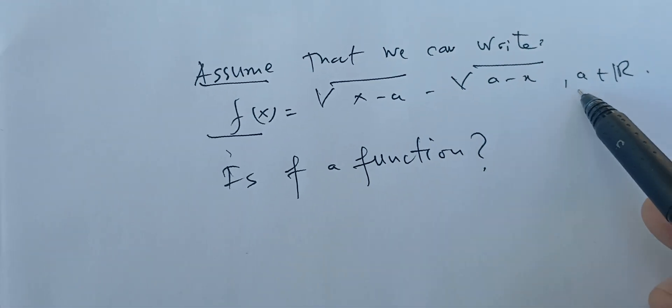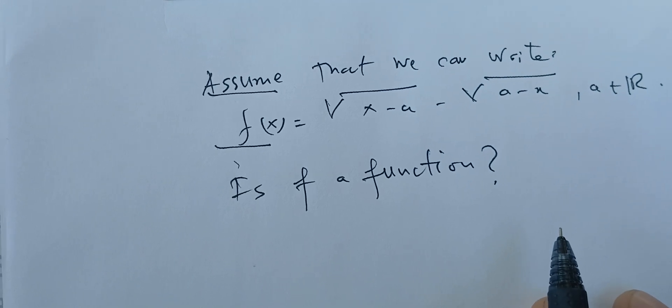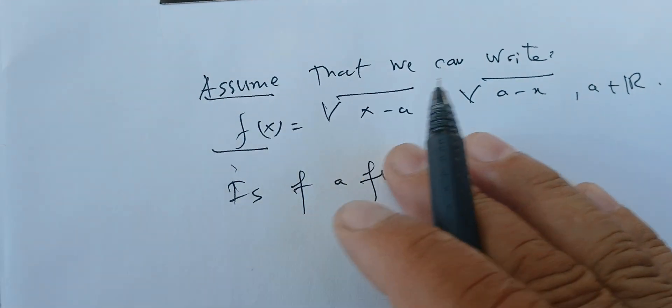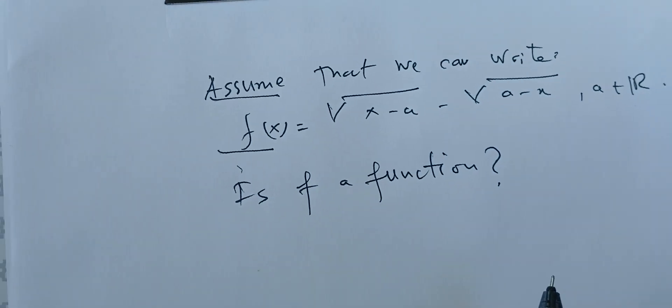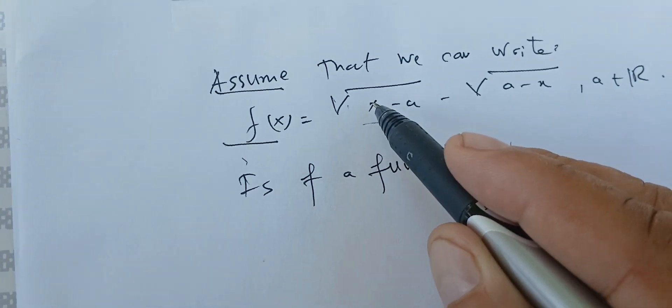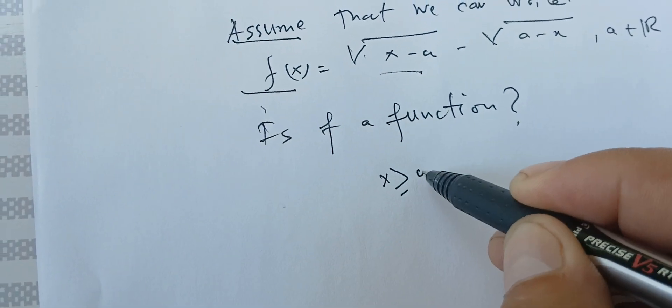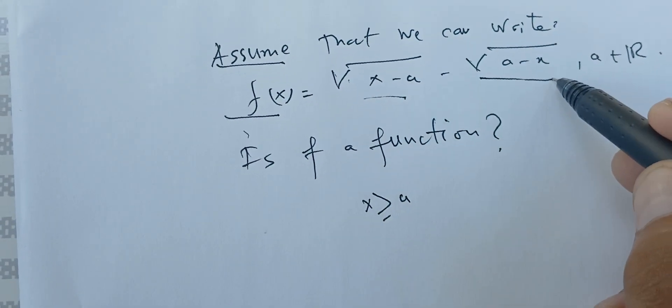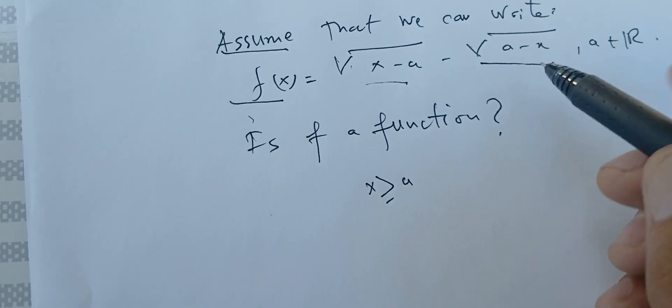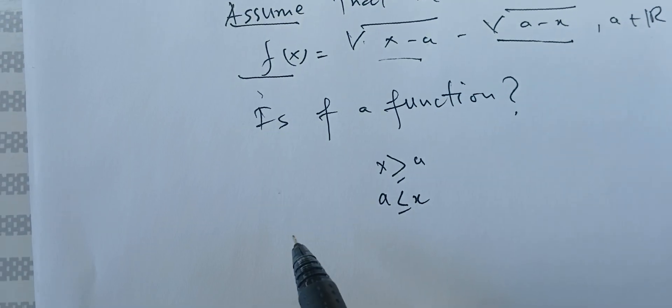Here, we have this number a in R, and I'm assuming that x is a real number. So we are trying to answer this question for the set of real numbers. The first thing we can notice is that to have the square root of x minus a defined, we need to have x bigger than a. Also, to have the square root of a minus x defined, we need to have a less than x.